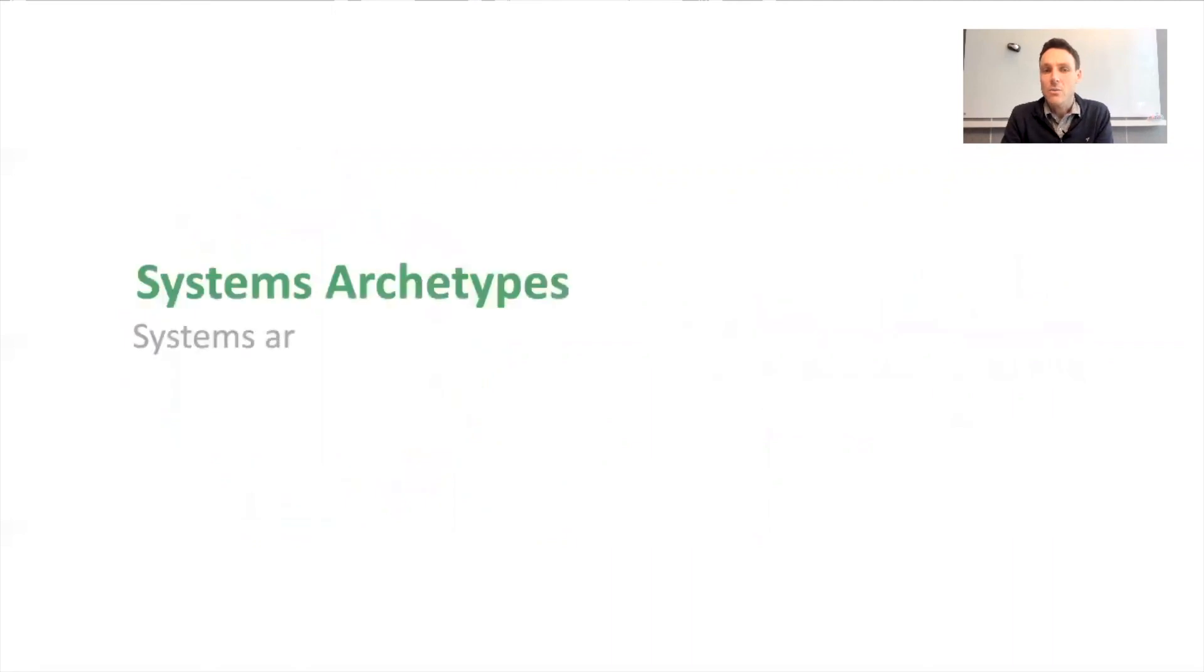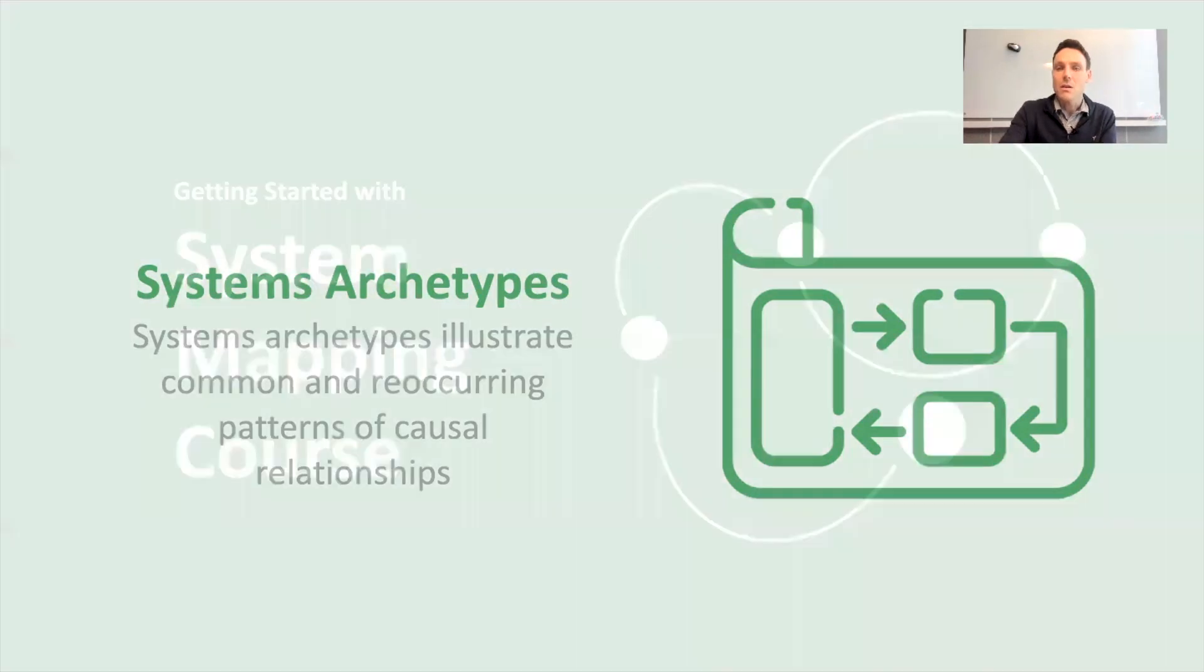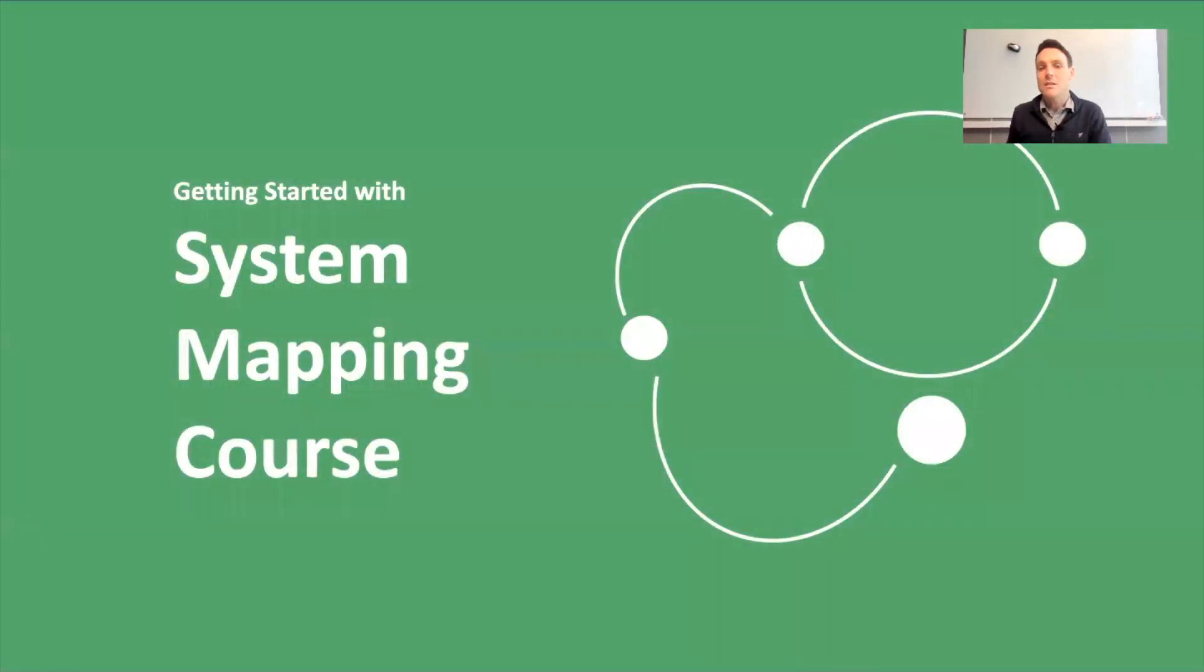In the final section we'll be talking about systems archetypes. These are commonly seen structural patterns within a system that lead to specific types of outcomes that we see in a wide variety of systems, and we'll be looking at many different types of maps as we go along so that you understand what they are, how they work, and most importantly you learn how to start to build your own.